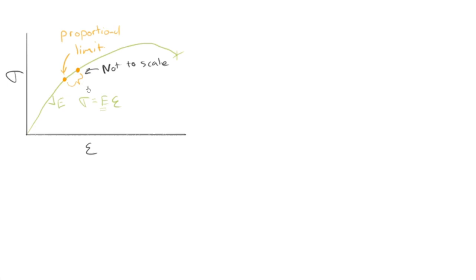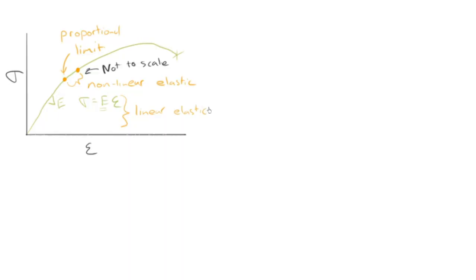There is going to be some region after the proportional limit where you have what we would call non-linear but still elastic, non-linear elastic deformation. This region here, driven by Hooke's Law, was both linear and elastic. Most materials, well all materials, will have a little bit of non-linear elasticity. Metals, not very much, but a bit.